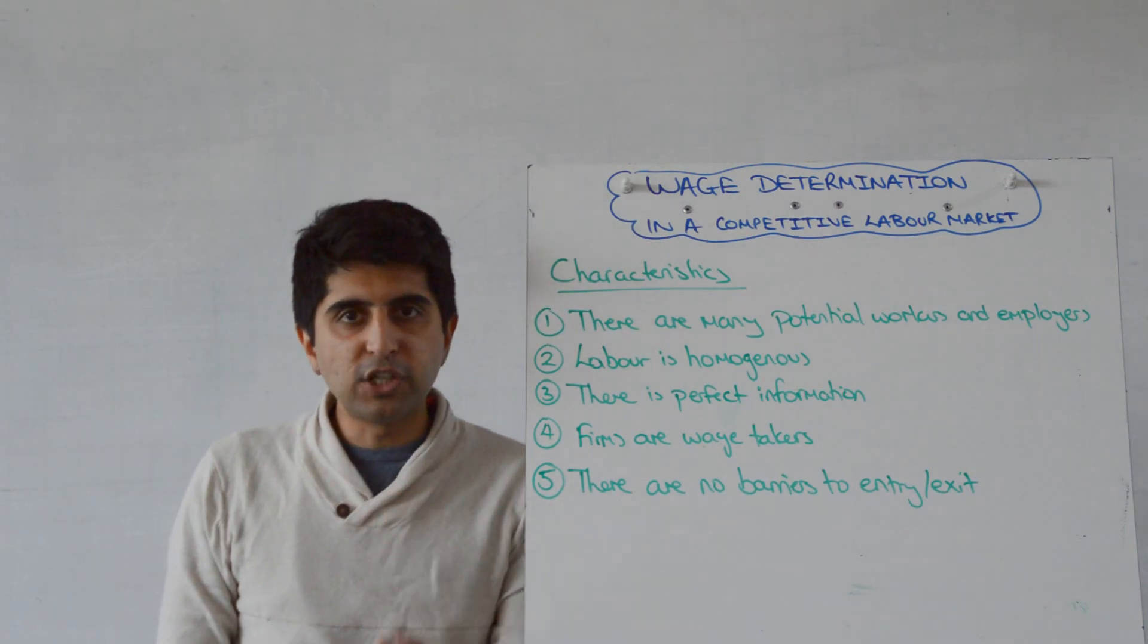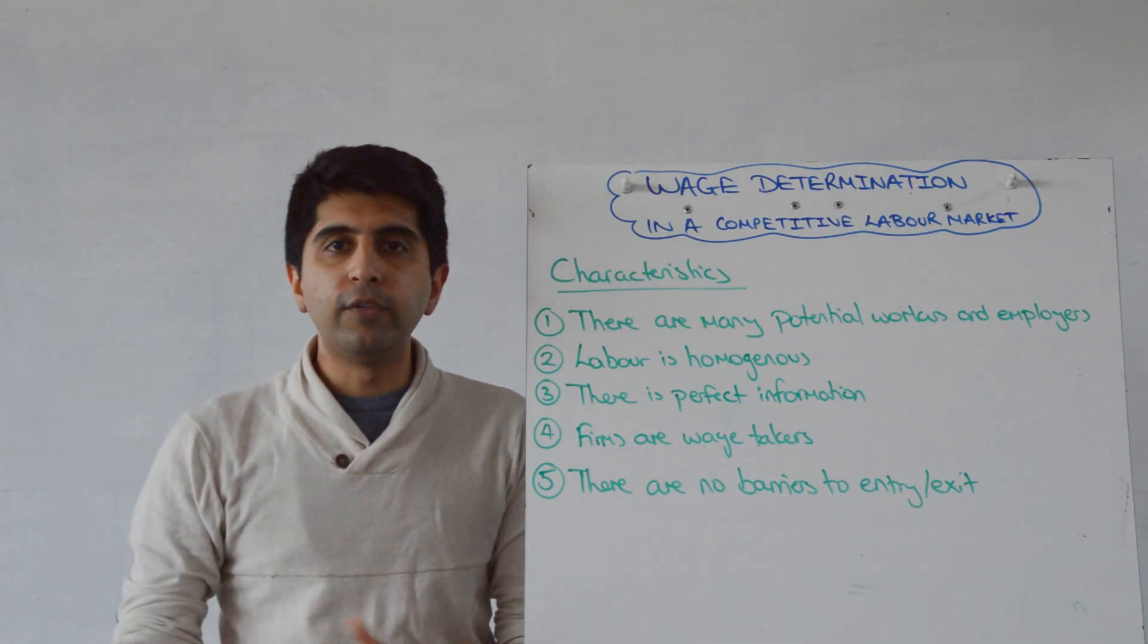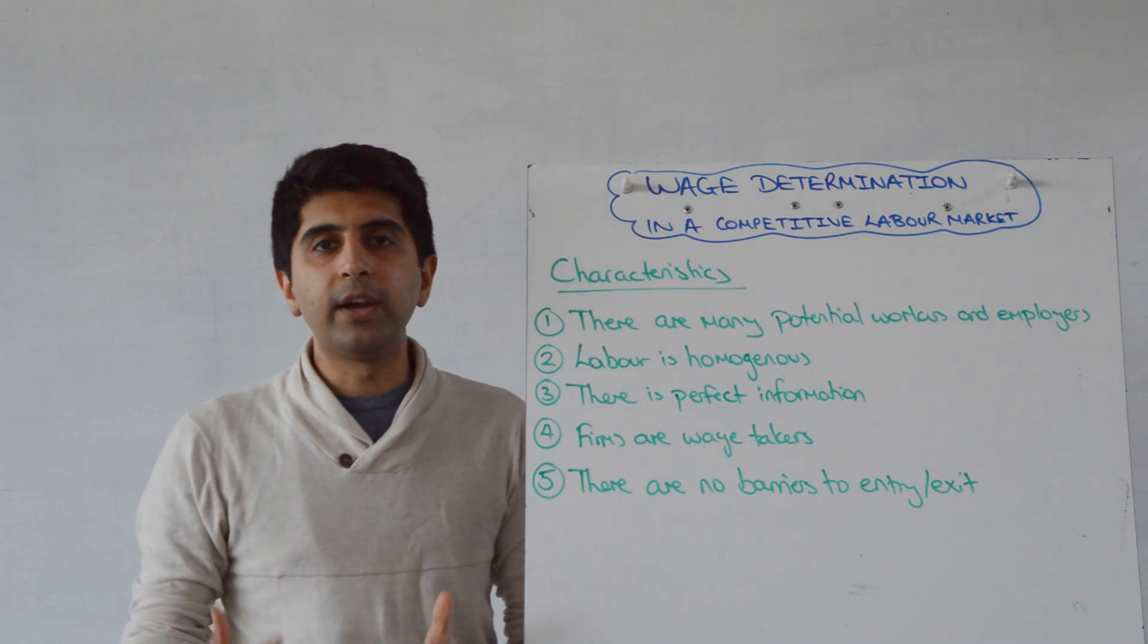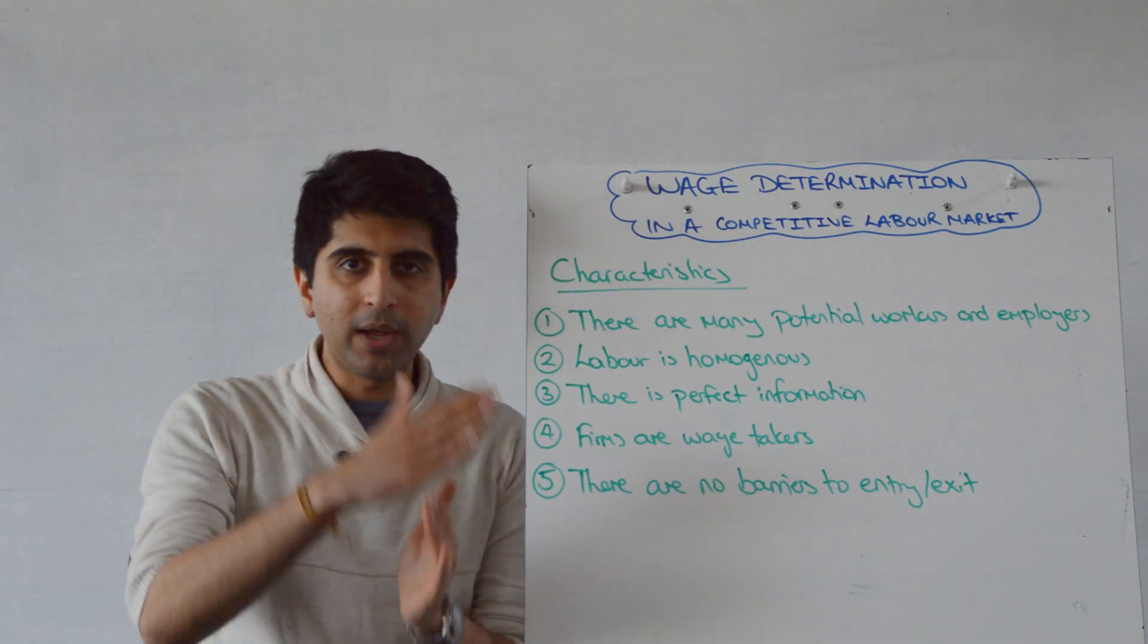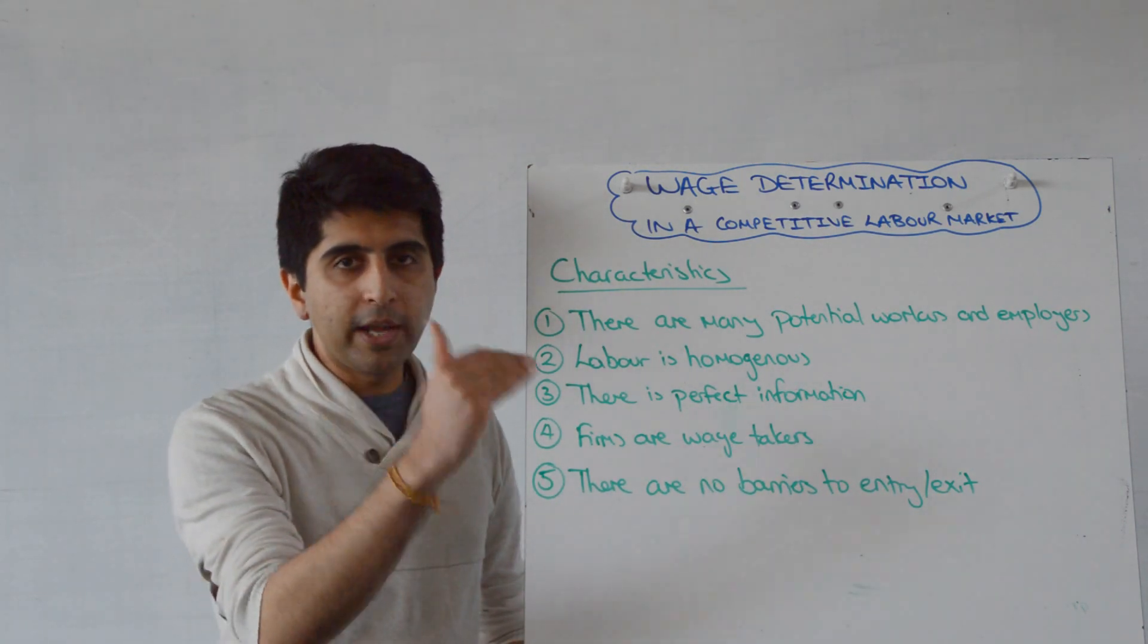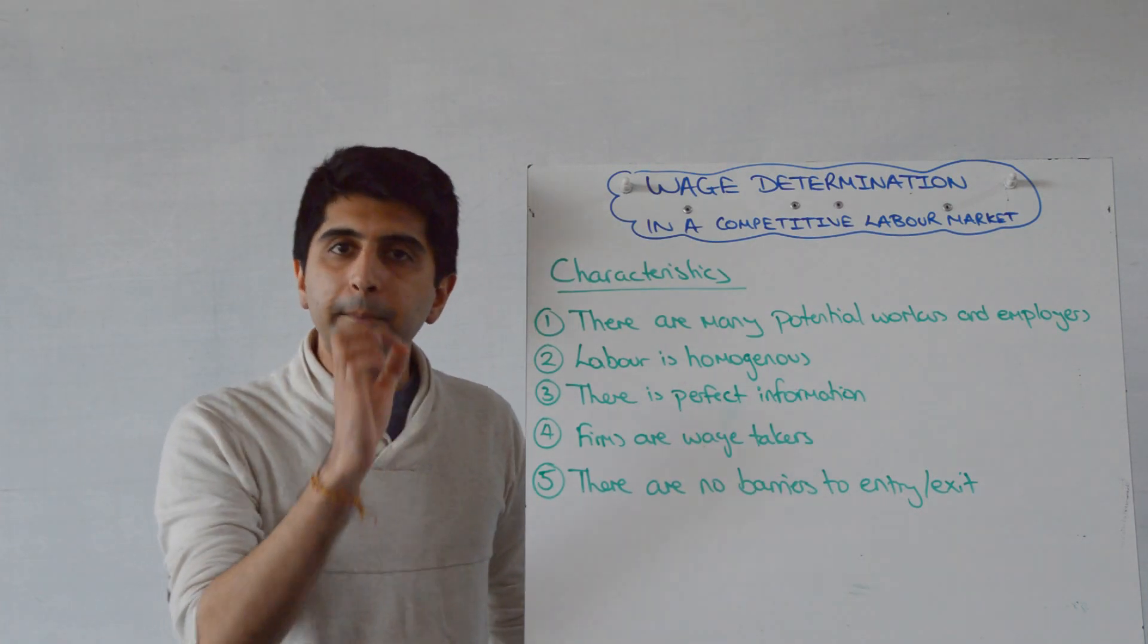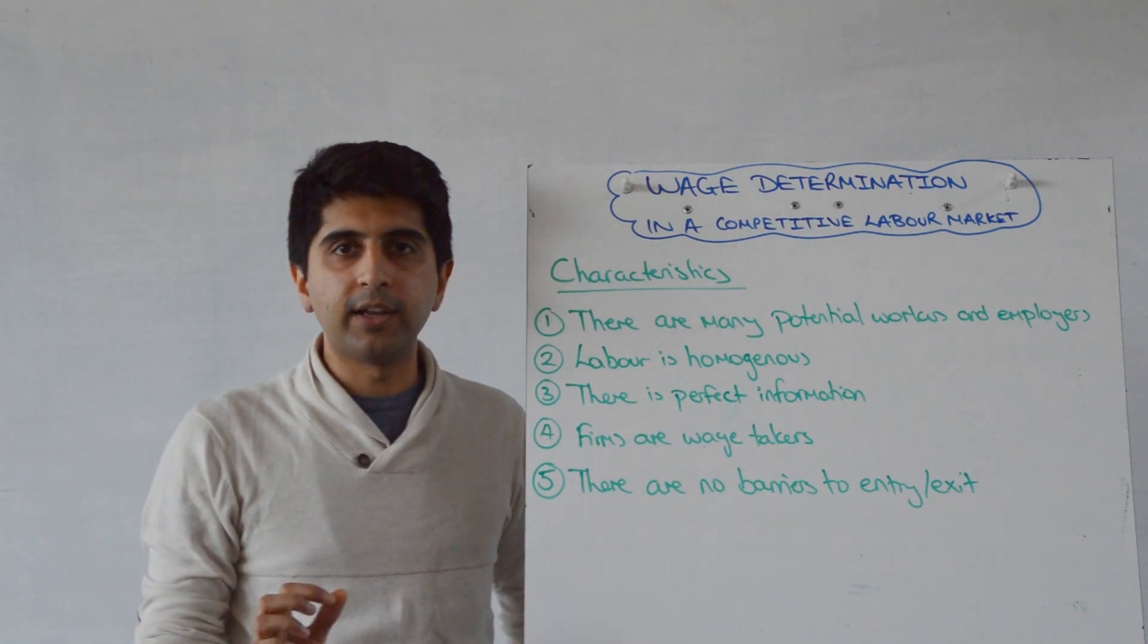We assume that firms are wage takers, they've got no control over the wage that they can offer to their workers, they take it from the market. So where demand equals supply, where the wage rate comes from, firms must take that wage and offer it to their workers.